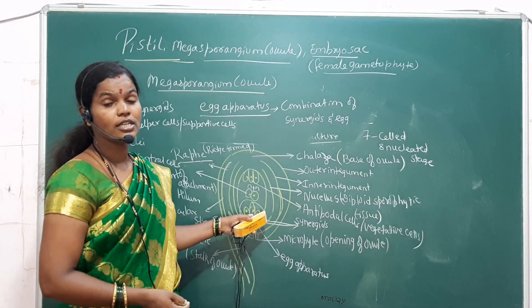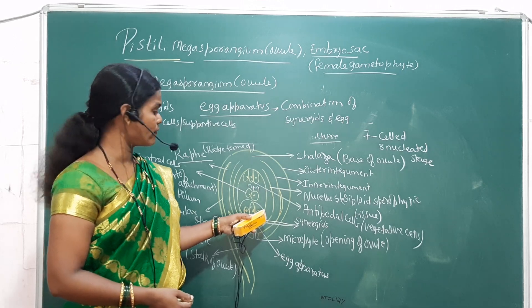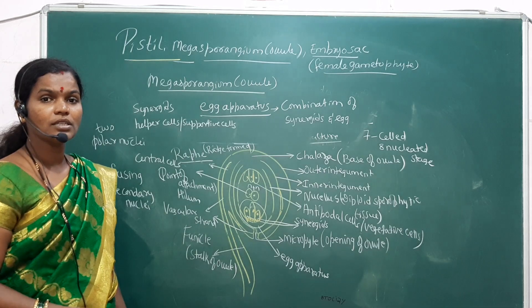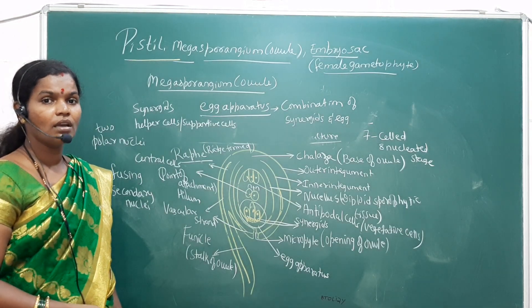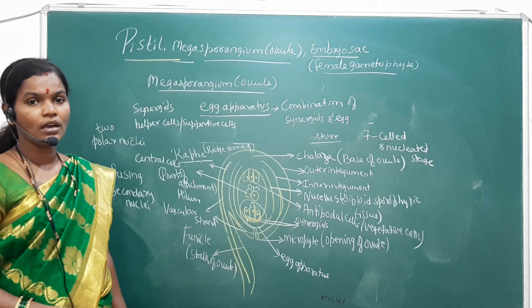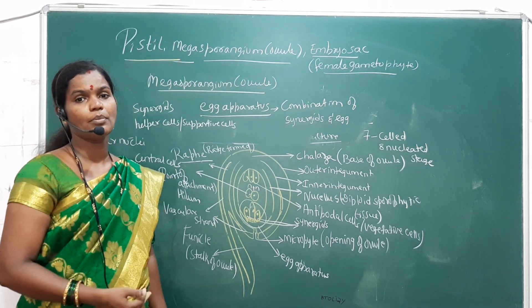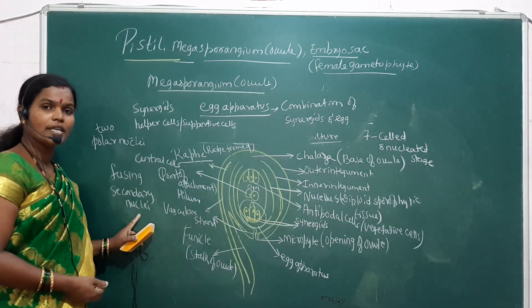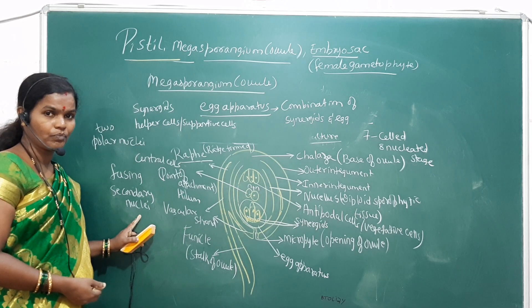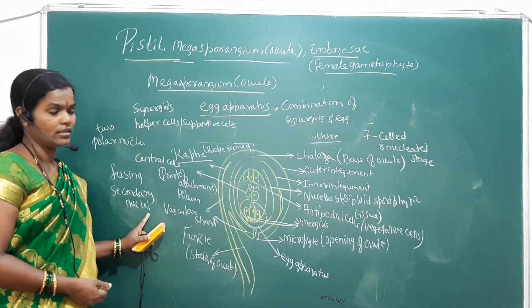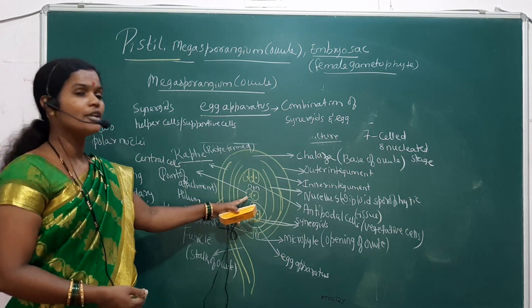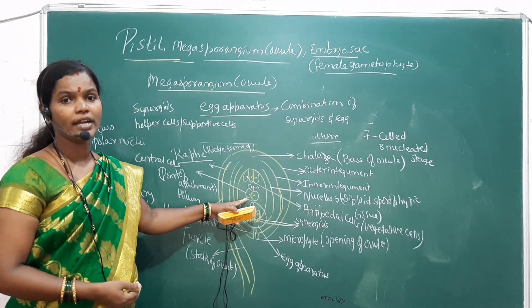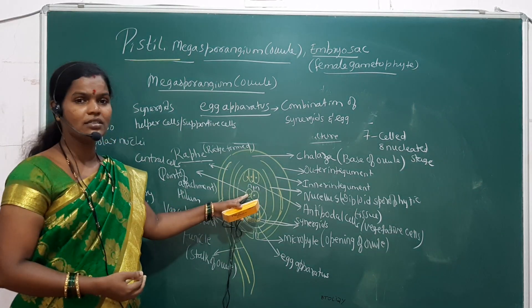The egg is also called as ovum. In the center of the embryo sac, there are two haploid polar nuclei which during fertilization undergo fusion. That fused cell is called secondary nuclei. This secondary nuclei is the largest cell in the embryo sac because of its diploid nature — N plus N equals 2N.